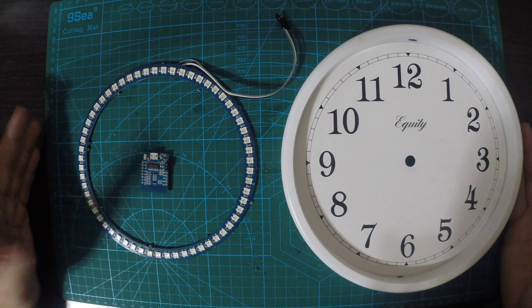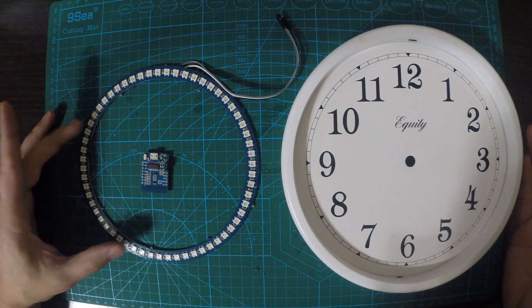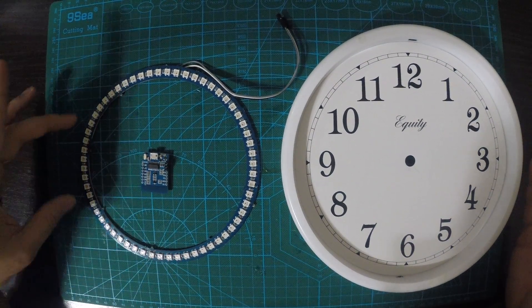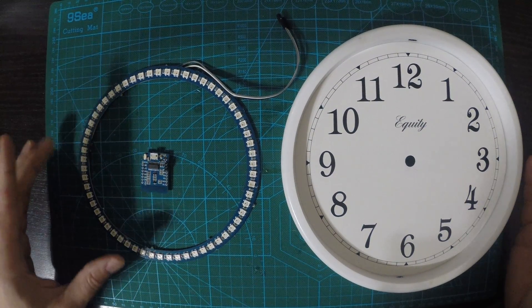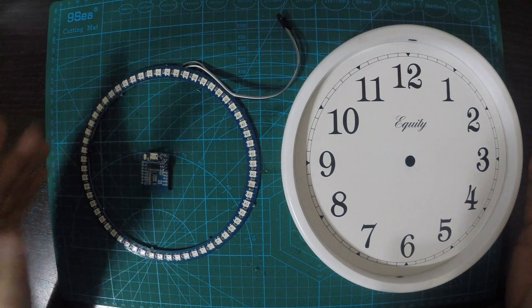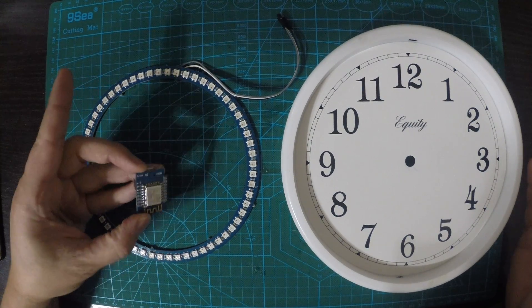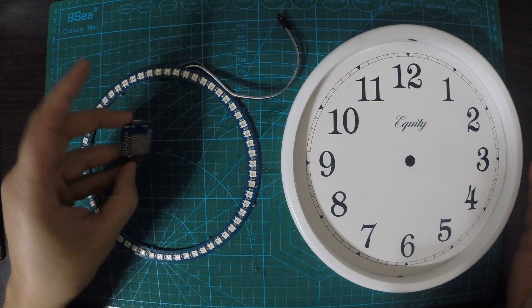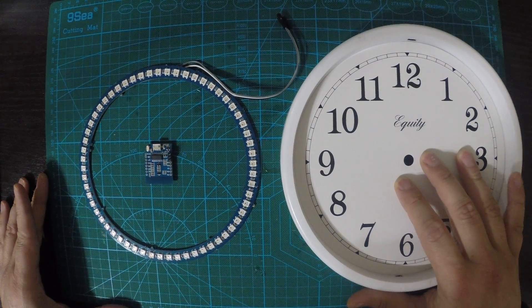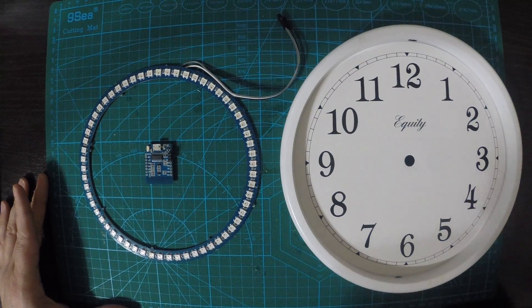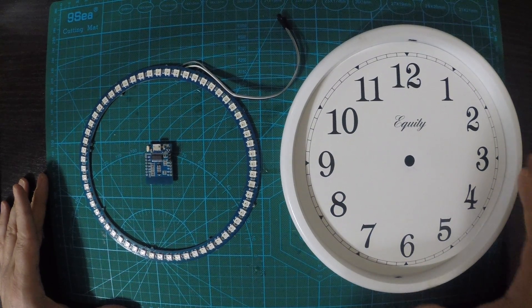So I've got some parts here. I've got the NeoPixel rings which come in quarter circles, 15 per module. I've soldered them together and I'll show you that in a minute. I've got the Wemos D1 Mini, this is a clone. And then I've got a clock face which I've salvaged from a non-operational clock.